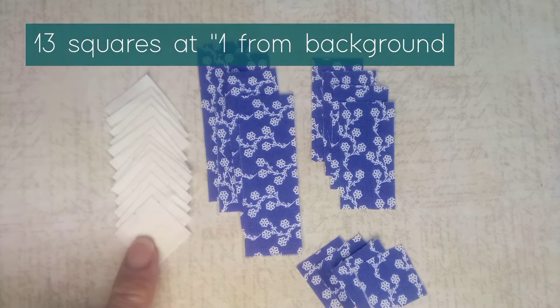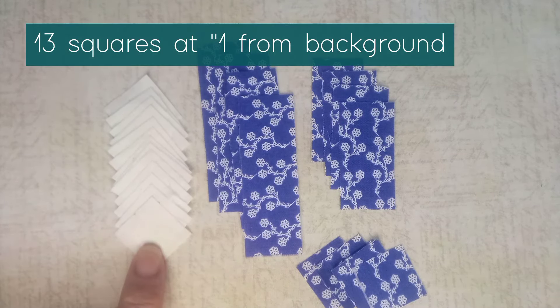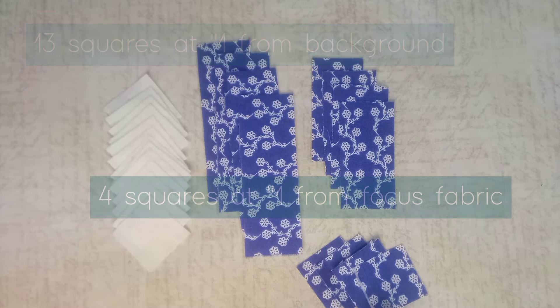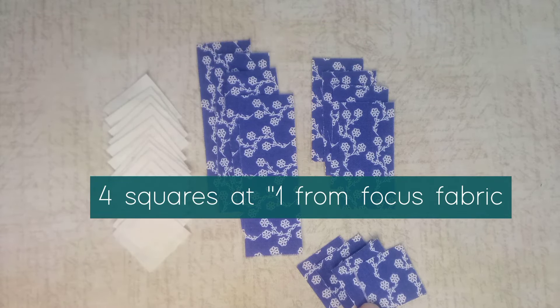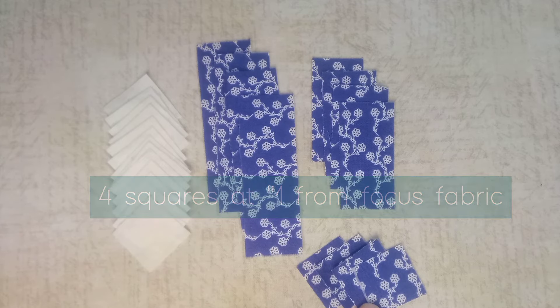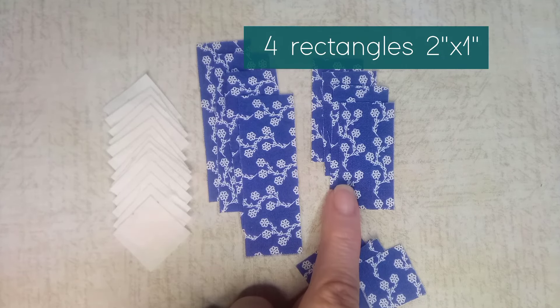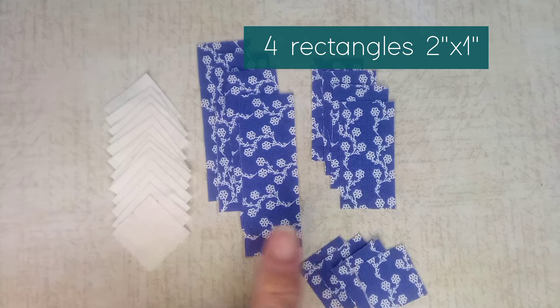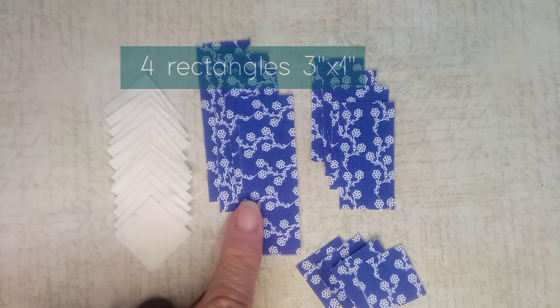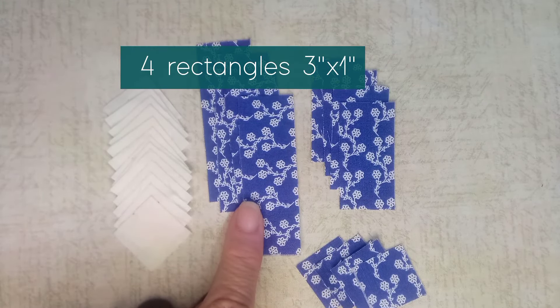I have all the pieces cut except for the outer border. I'm going to wait until I get the center part of this block done, then I can measure it and just make sure that my strips for the outer border will be wide enough. I have thirteen of the one-inch squares cut out of muslin and four one-inch squares cut out of my main focus fabric. Also out of the main focus fabric, I have four rectangles that are cut two by one inch and four rectangles cut at three by one inch.